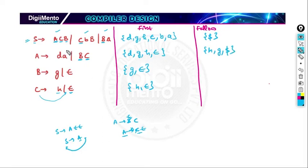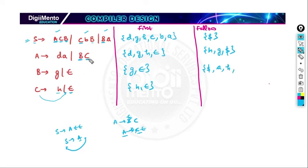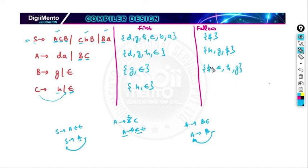FOLLOW(B): B appears in S → ACB — nothing follows, so FOLLOW(B) includes FOLLOW(S) = {$}. B appears in S → CbB — nothing follows, so FOLLOW(S) = {$} again. B appears in A → dABC, followed by C. FOLLOW(B) includes FIRST(C) = {h}. If C produces epsilon, FOLLOW(B) = FOLLOW(A) = {h, g, $}. B also appears in S → BaC, followed by 'a', so FOLLOW(B) includes {a}. FOLLOW(B) = {h, g, a, $}.